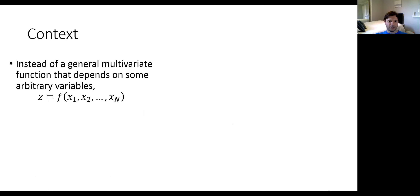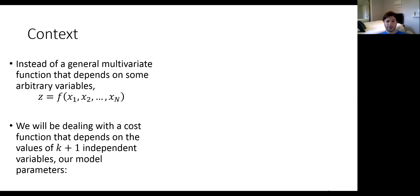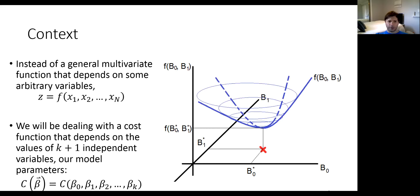In our context, instead of a general multivariate function, we're thinking about a cost function that depends on k+1 independent variables — like a regression model with k slope parameters and an intercept term. We have the cost function as a function of the beta vector. In the three-dimensional case, we have a bowl and we're trying to climb to the bottom by finding the optimal parameters beta zero and beta one star, in the beta zero–beta one plane.